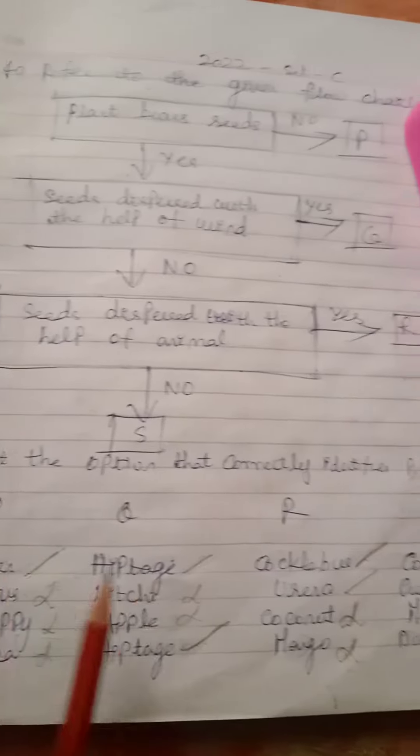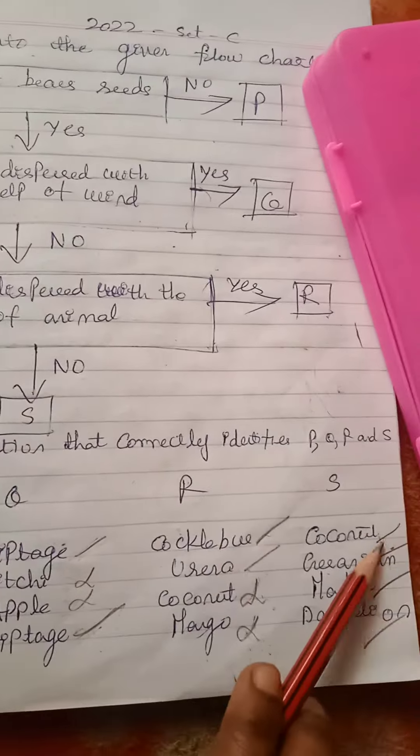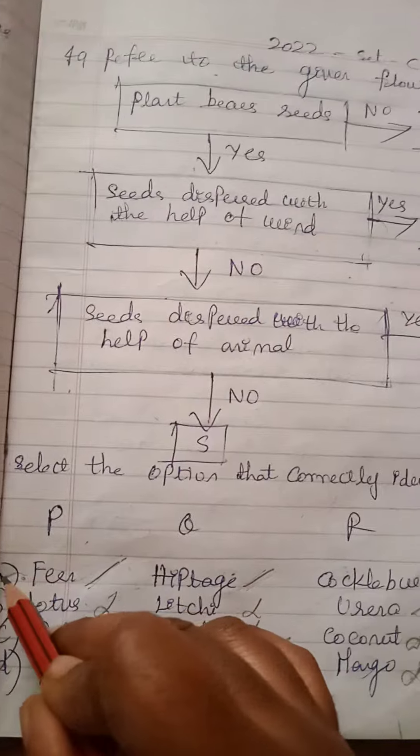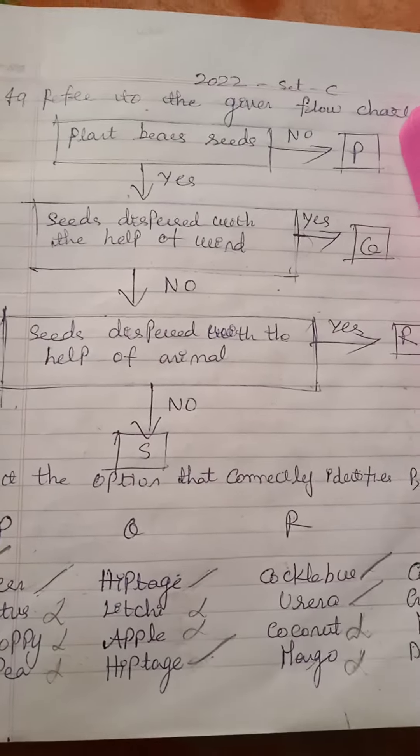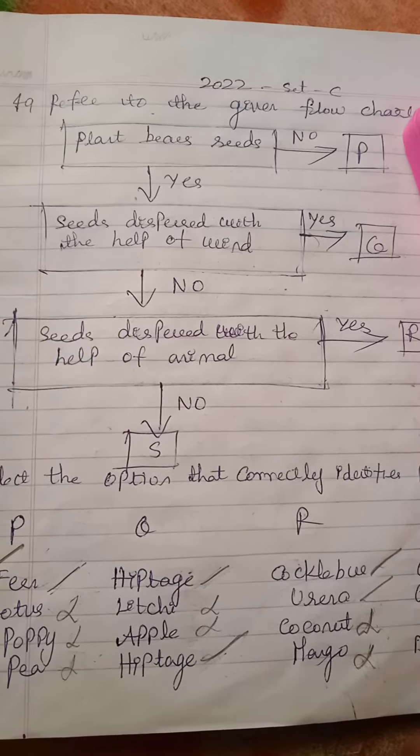So all the tick marks got selected in option A which is the answer. This is from the Achieve section of last year 2022 set C.